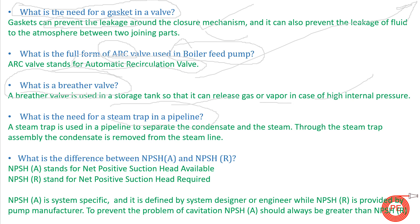The next question is: what is the need of a steam trap in a pipeline? Steam traps are important fittings used in steam systems. They are used to separate the condensate from the steam. This condensate needs to be removed at several points from the steam pipeline, because if it travels with the steam it can cause temperature losses and water can enter turbines or other machinery. The condensate is removed with the help of steam traps.